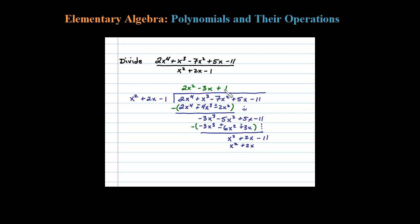1 times x squared is x squared, 1 times 2x is plus 2x, and 1 times negative 1 is minus 1. After which you subtract: x squared minus x squared is 0, 2x minus 2x is 0, and distributing that negative makes it a plus 1, so negative 11 plus 1 is negative 10. That's our remainder. You add the remainder as a fraction over your divisor, which is x squared plus 2x minus 1.